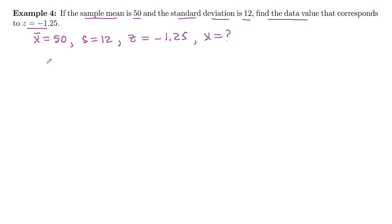We know three of the four things in the z-score formula. Our z-score formula is z equals, for sample data, x minus x-bar over s.